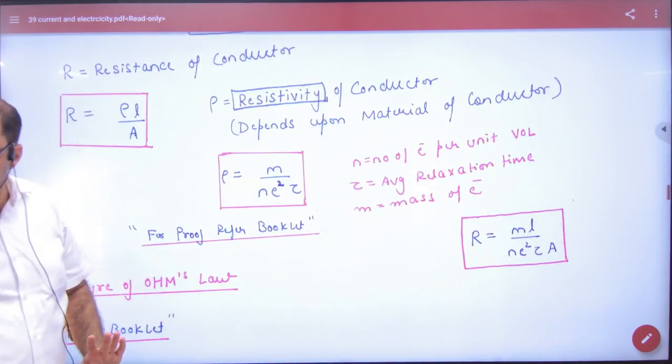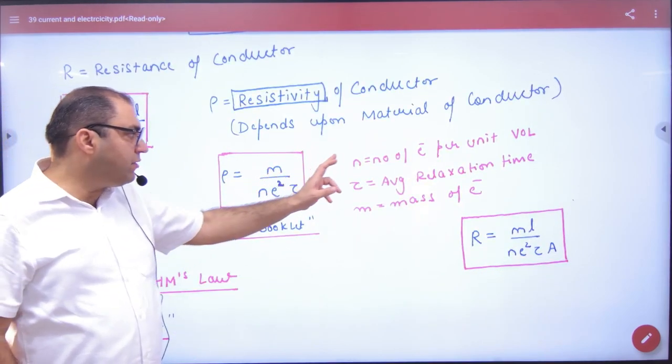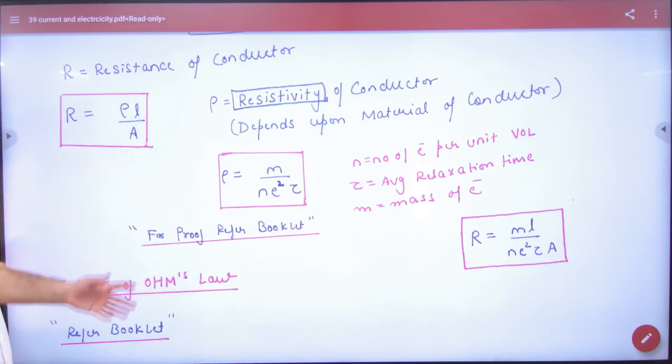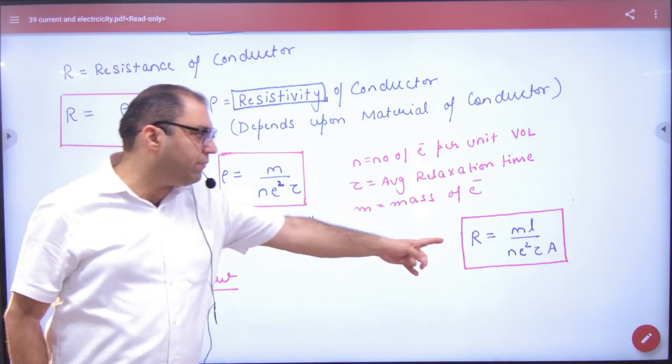Rho formula you have noted in the formula booklet where M is mass of electron and tau means average relaxation time. We have proved R formula also in average relaxation time.